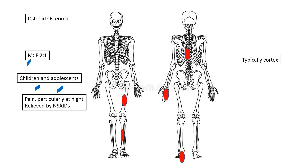There are some bones that are more commonly involved than others — long bones, particularly the femur and the tibia, the bones of the hands and feet as well, and in the spine, particularly the posterior arch. Within individual bones, it more frequently affects the cortex, although you can have osteoid osteomas growing out of the cancellous or medullary region of the bone.